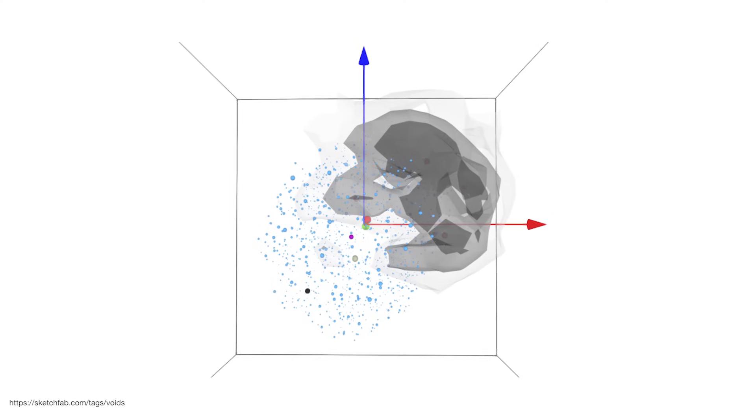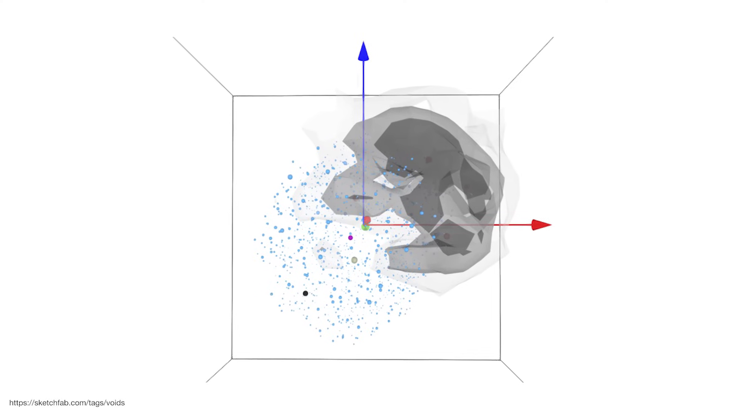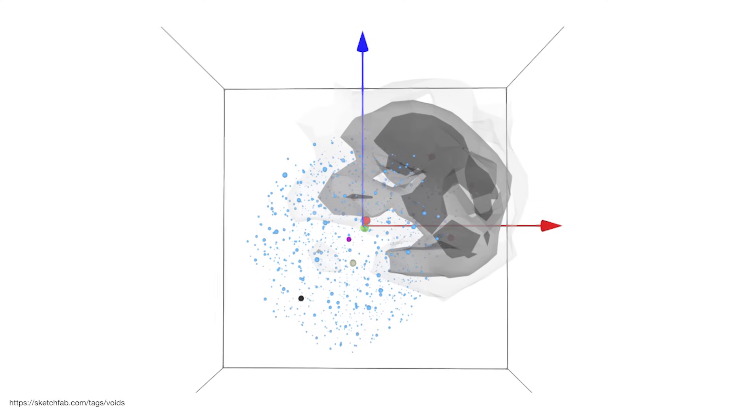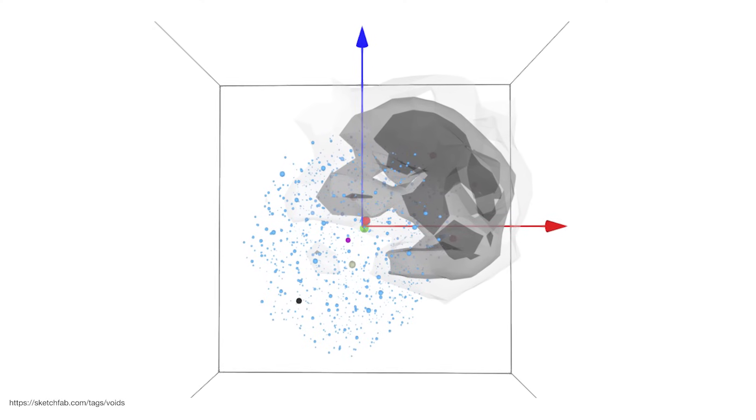Remarkably, this local void model can explain both the higher local Hubble constant values and the observed bulk motions of galaxies streaming away from the void, without needing to tweak any parameters precisely. If confirmed, this could mean we don't necessarily need to modify our theories of gravity or cosmic expansion.